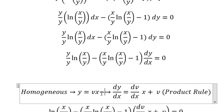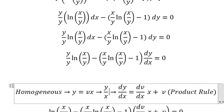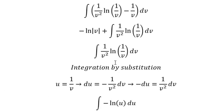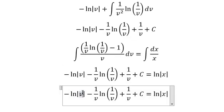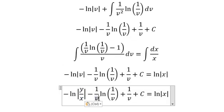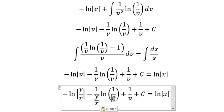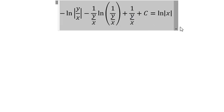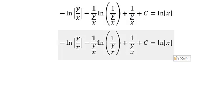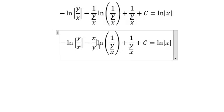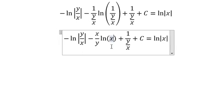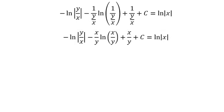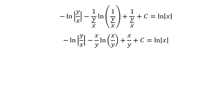Now we need to go back — this one is about ln of the absolute value of x. About v, that is this one, so we need to divide both sides by x. Now we need to change v into this one — this one is about x over y. This is the end. Thank you for watching.